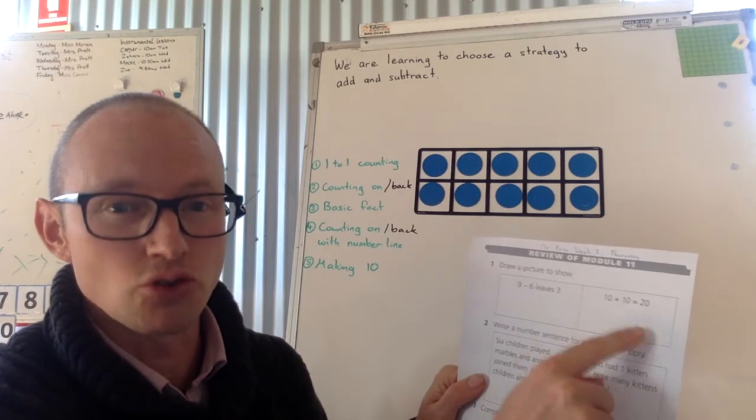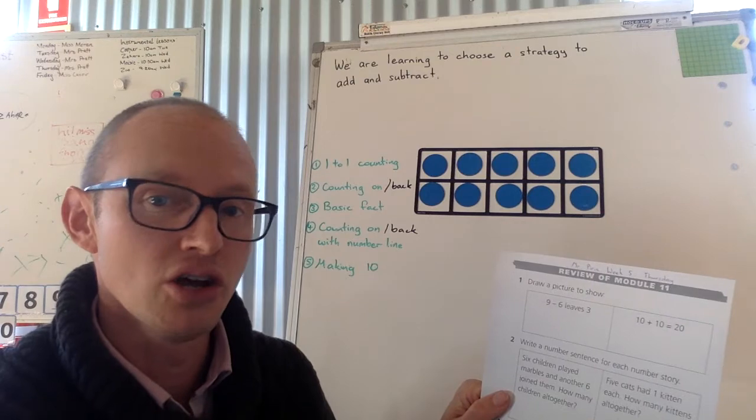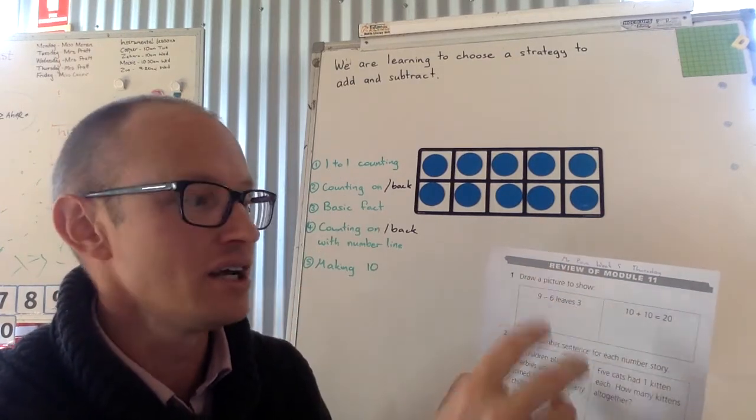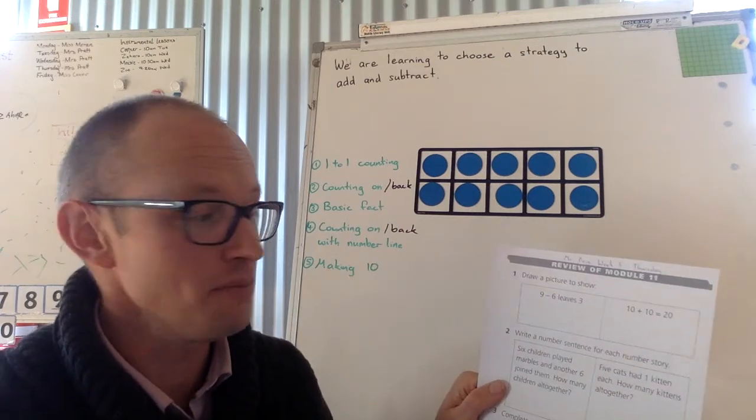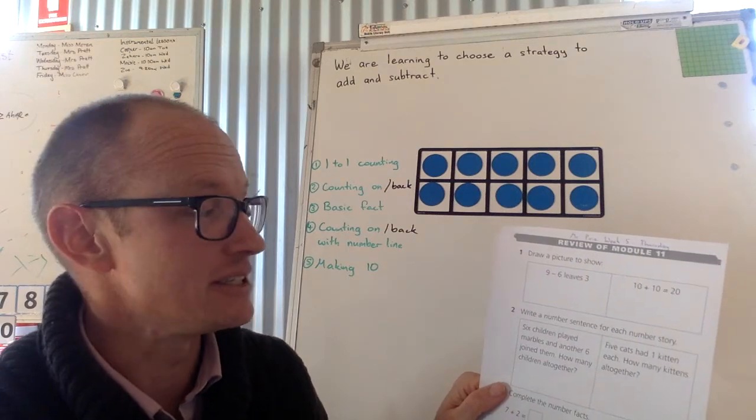10 plus 10 equals 20. Again, draw a picture to show it. Think about which strategy. Is it the number line counting on or is it the two groups, going to draw a group of 10 and a group of 10 to prove it? We're going to write the number 10 and then draw a group of 10. So showing the counting on. You choose the one that you think is going to be the quickest and the easiest.